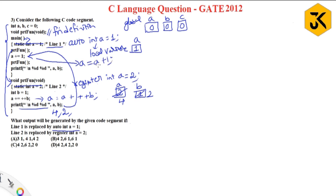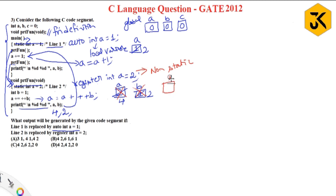After the function returns, the cursor moves back to main. The next statement is a += 1, meaning a = a + 1. The local variable a in main has value 1, updated to 2. Then the cursor calls 'print function' once again. Here you need to observe: the register variable is non-static, so its memory is created fresh each time. So a = 2 and b = 1 again.